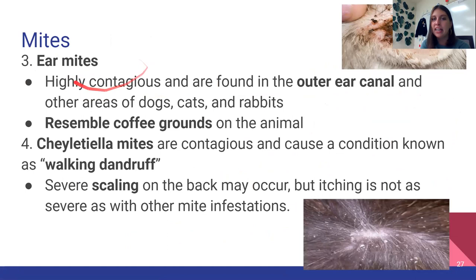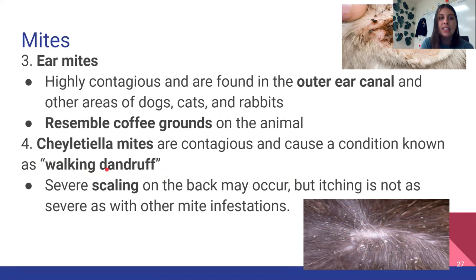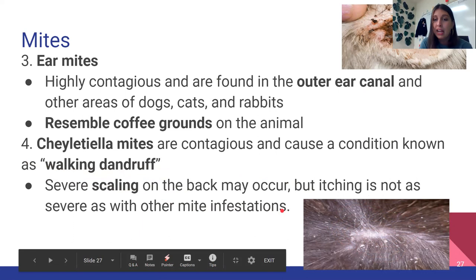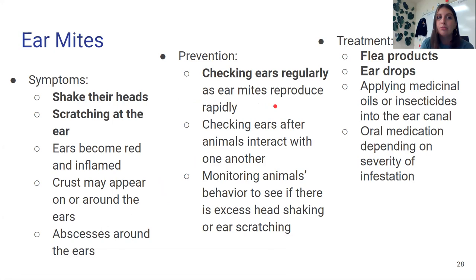Ear mites live in the ear. They're pretty contagious and kind of look like coffee grounds in the ear canal — really gross, but they group together into little brown clusters. Cheyletiella mites really look like dandruff on an animal — they're known as walking dandruff. In severe cases they can cause scaling of the back, where the hair falls out and the skin gets dry and crusty, but you'll normally just see the dandruff. If your animal has ear mites, you'll see them shaking their head and scratching their ears. You can look in their ears and see what looks like coffee grounds. Prevent it by checking their ears regularly and keeping their ears clean. You can treat with eardrops prescribed by your vet.